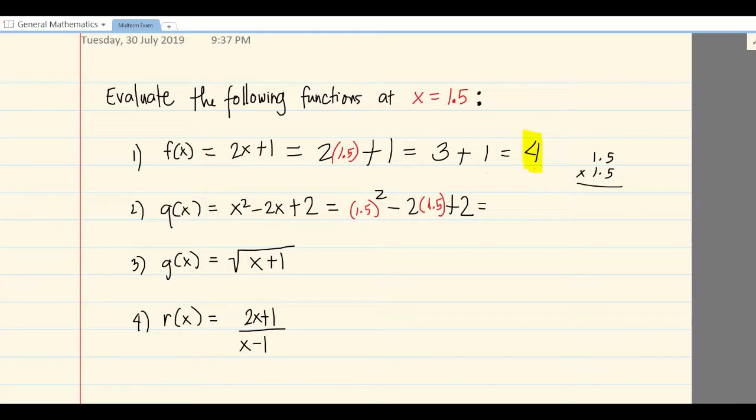The given is 1.5, so 1.5 squared means you multiply the number by itself, so 1.5 times 1.5. If it's cubed or to the power of 3, it means multiply three times. Since it's squared, multiply twice.